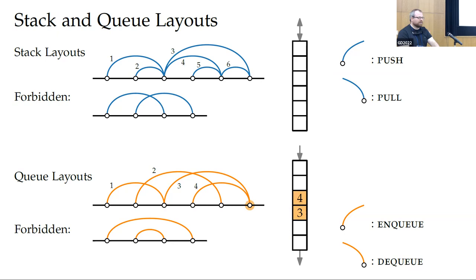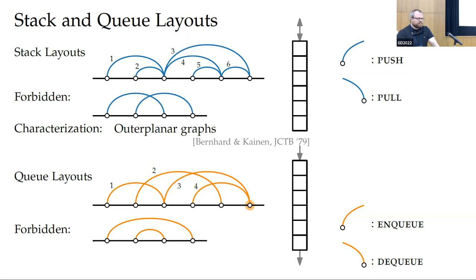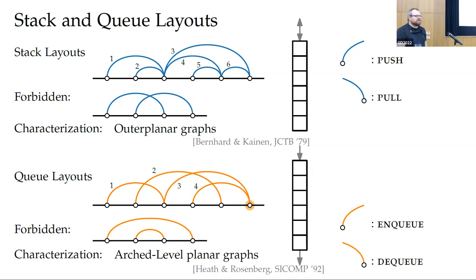There are many questions we can ask about these layouts. The most natural is: can we characterize and recognize graphs that have these layouts? This has been long solved. For stack layouts, it's exactly the outer planar graphs. For queue layouts, as shown by Heath and Rosenberg, it's the so-called arc-level planar graphs. Recognition for outer planar graphs is in linear time, but for queue layouts, it's NP-hard.